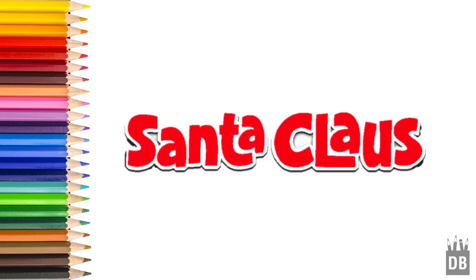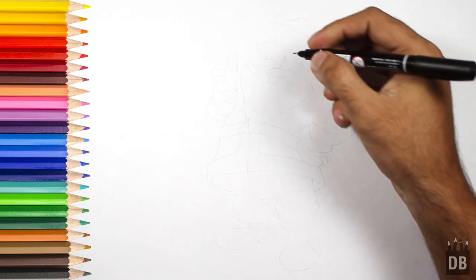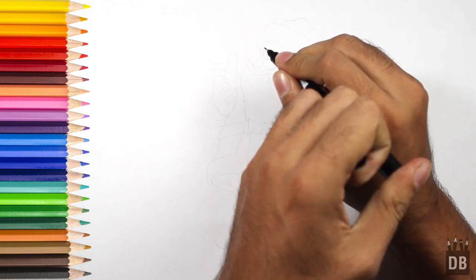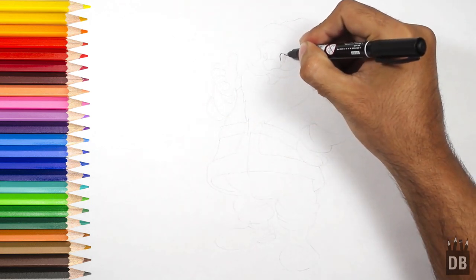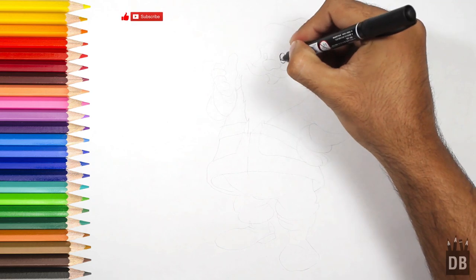Welcome to Drawing Book Studio, and today we are going to make Santa Claus. Let's draw. Let's start from his eyes. The eyes are in oval shape like this.